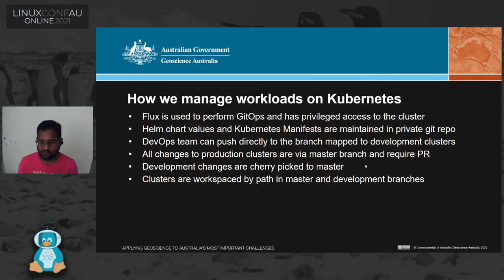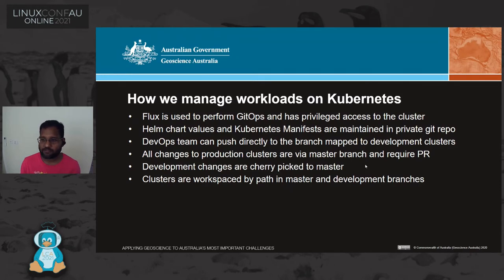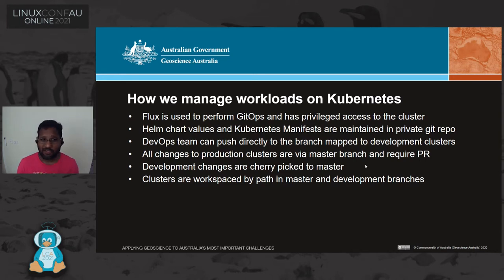We apply Helm chart values and Kubernetes manifests in a private Git repo. The DevOps team can push directly to the development cluster by pushing to Git rather than running kubectl apply. We can ship to a production cluster by doing a PR to master, cherry-picking the changes we want. I'm open to suggestions about a better Git workflow for managing multiple clusters and separating dev, staging, and prod. We currently manage around six or seven clusters in Sydney, Cape Town, and Oregon, due to different workloads and data locality.